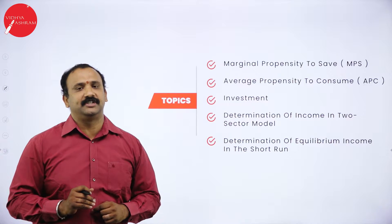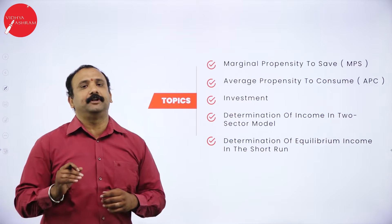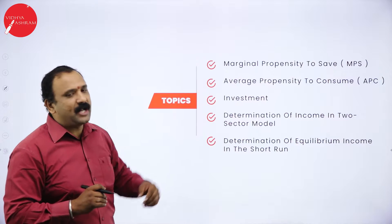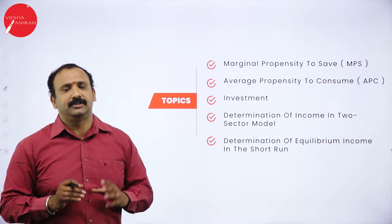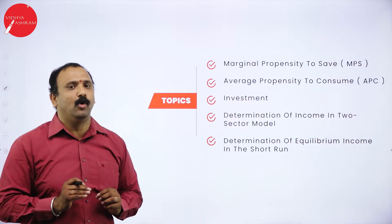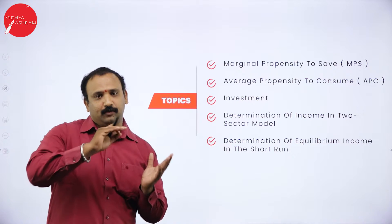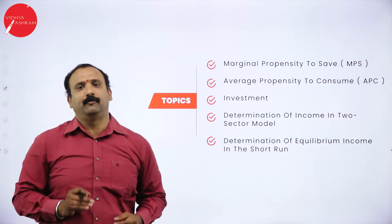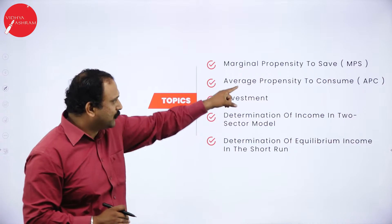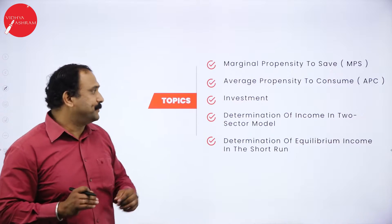The first topic is marginal propensity to save. We have seen the average propensity to save in the previous session, so now we are going to see the marginal propensity — this is going to be a slightly different mode altogether. Next is average propensity to consume; we have seen the marginal propensity already, now we are going to see about the average propensity.